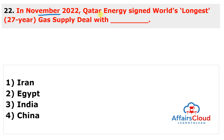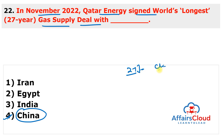Next question: In November 2022, QatarEnergy signed the world's longest 27-year gas supply deal with China. The China Petroleum and Chemical Corporation will receive 4 million tons of liquefied natural gas annually from QatarEnergy's North Field East Project, strengthening ties with Asia at a time when Europe is looking for alternate supplies.